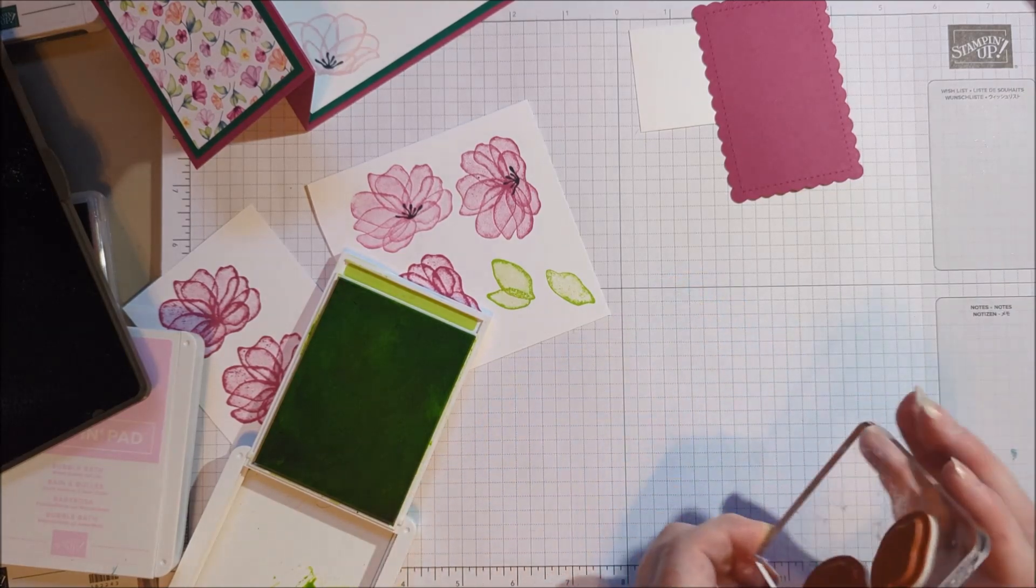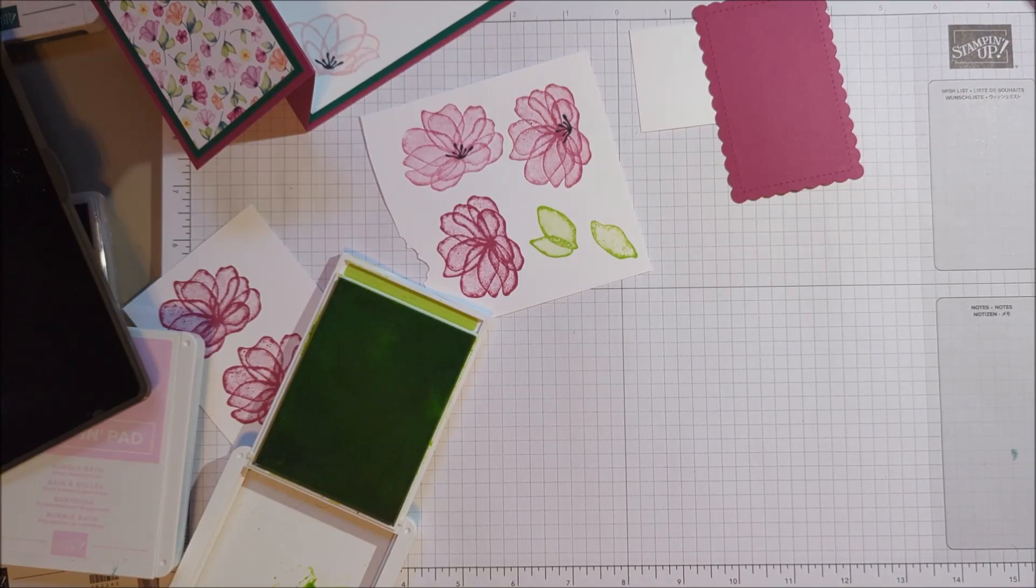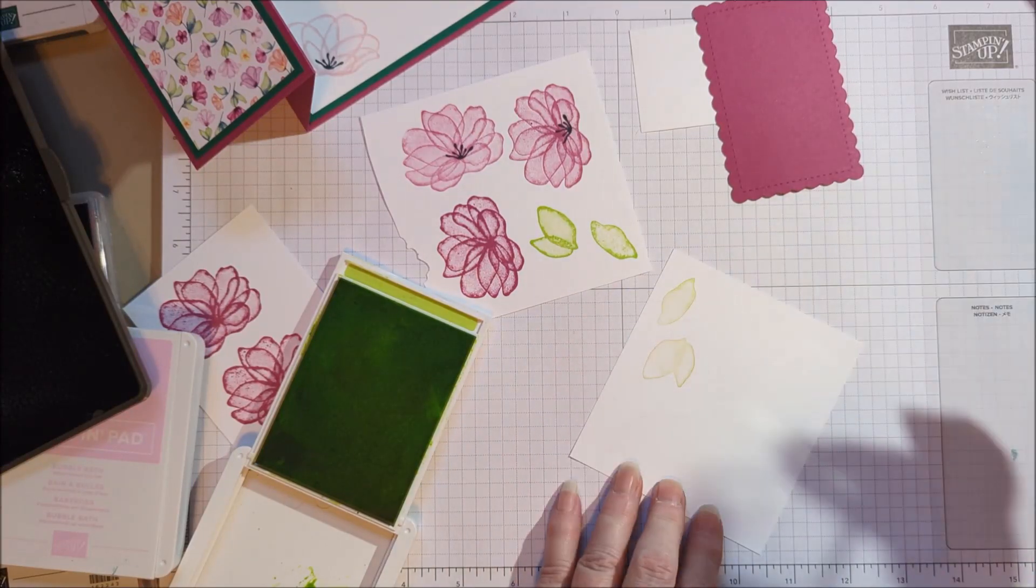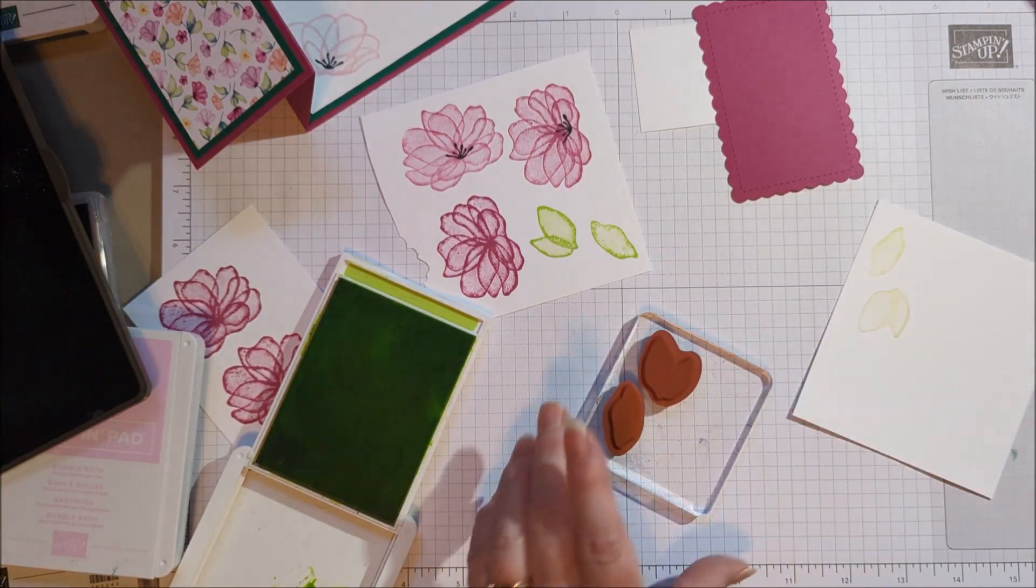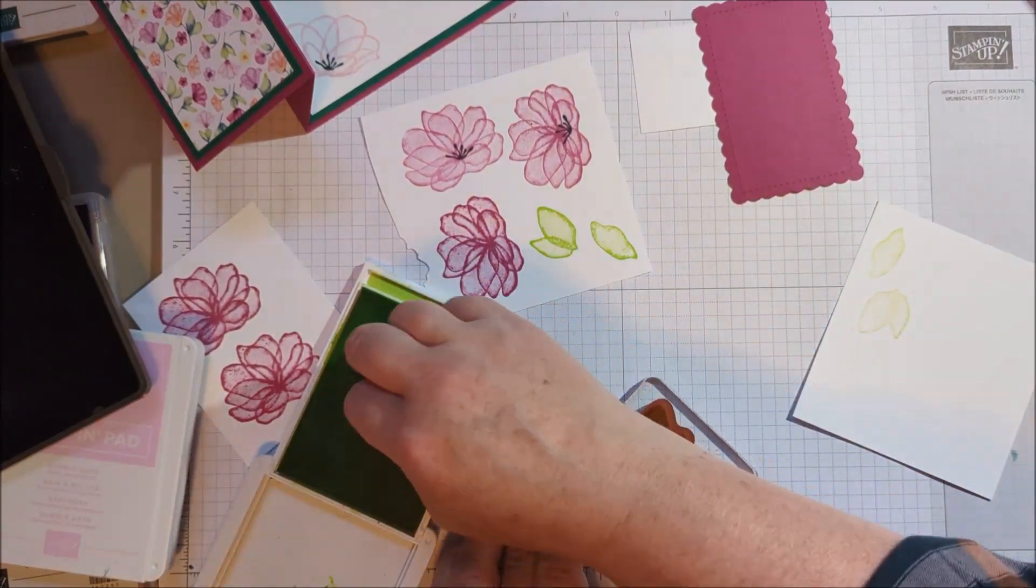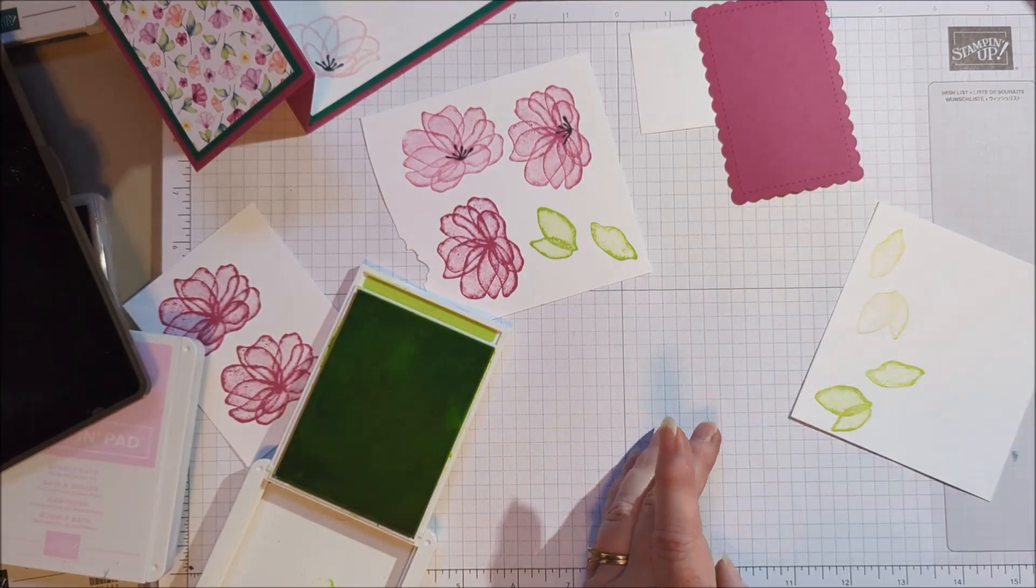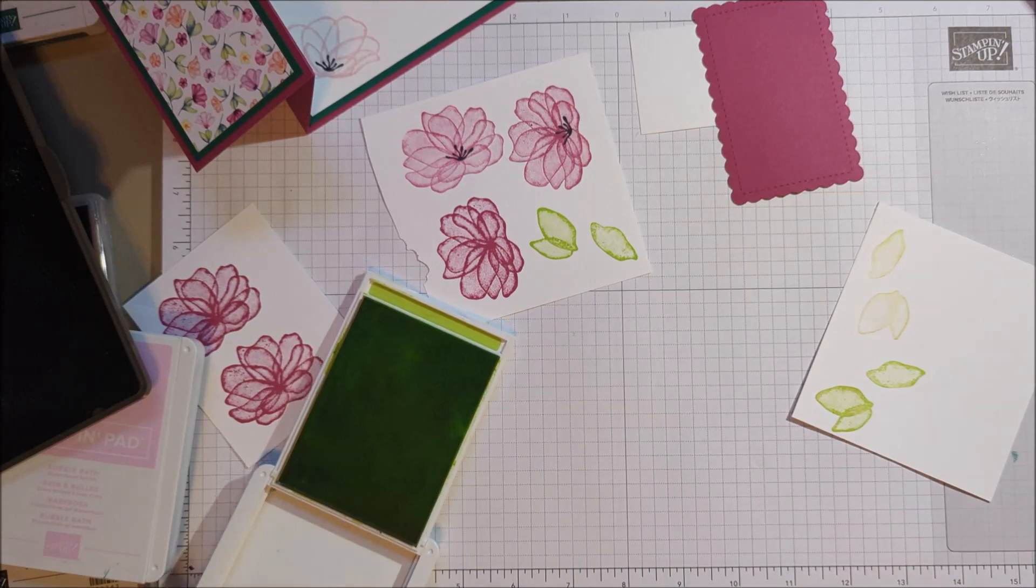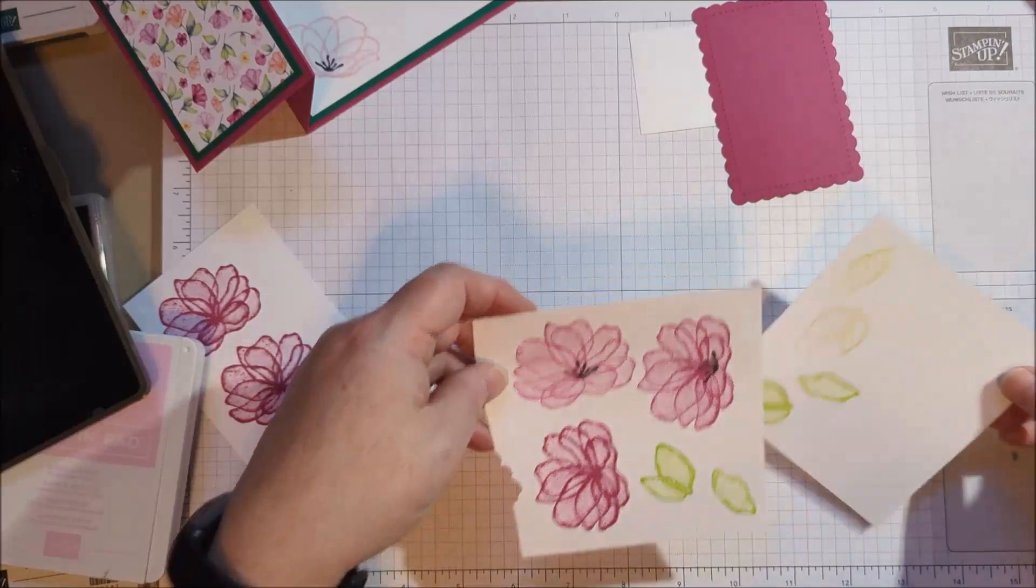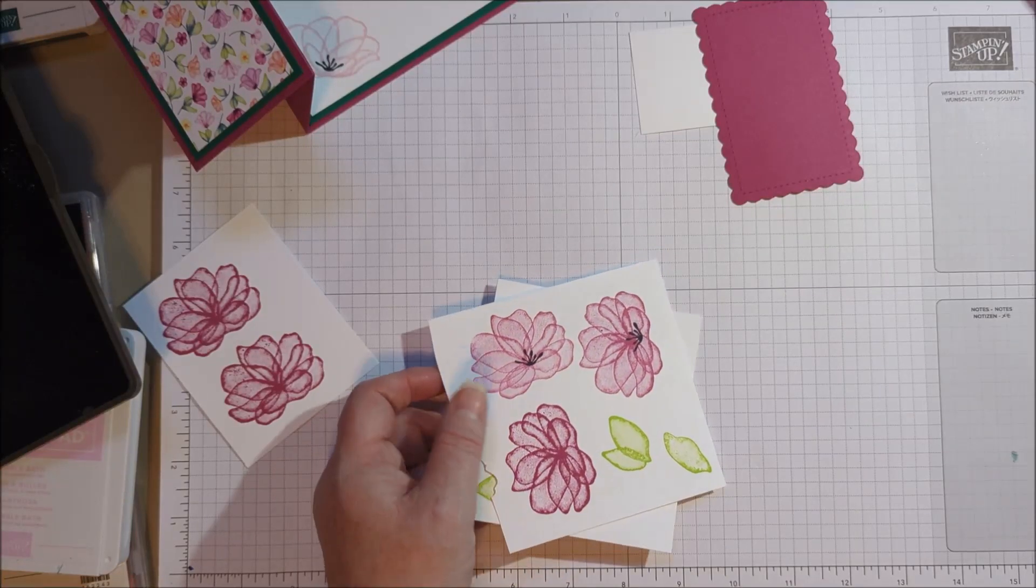So I've got a few sponge daubers that I use with multiple colors. And for example, the Berry Burst I'll also use with Melon Mambo. So you don't have to have a ton of sponge daubers. Much better. So I'm going to cut out my flowers and my leaves and be right back.